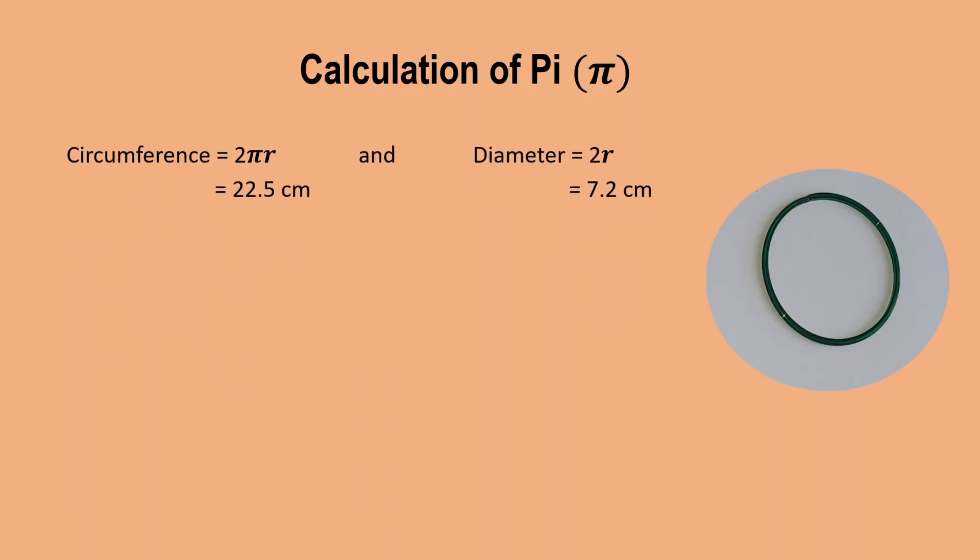So we got circumference 2πr and diameter 2r. Circumference as 22.5 centimeters, diameter as 7.2 centimeters. Now if we calculate 2πr by 2r that is circumference by diameter, then we will get the value of pi as 22.5 divided by 7.2.